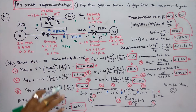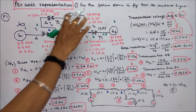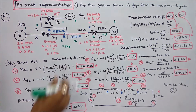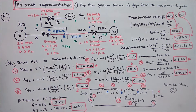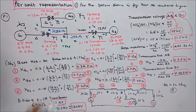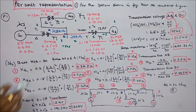Eighth is a generator. Rating is 15 MVA, 6.6 kV. Per unit reactance is 0.15. Now let's review the rating of each component.